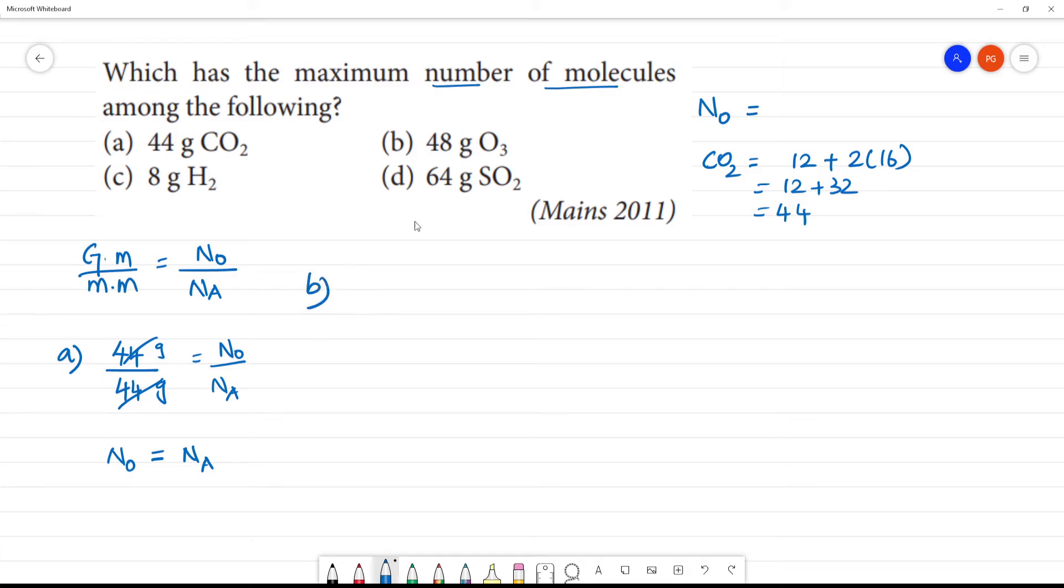Option B: 48 grams of O₃. Molecular mass of ozone is 3 times 16, which equals 48. So 48 grams divided by 48 equals N₀/Nₐ. This cancels out, and N₀ equals Nₐ, Avogadro's number.